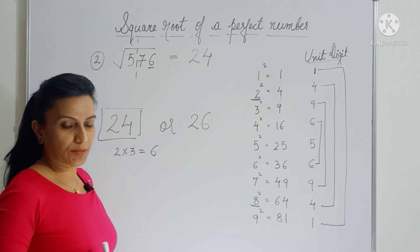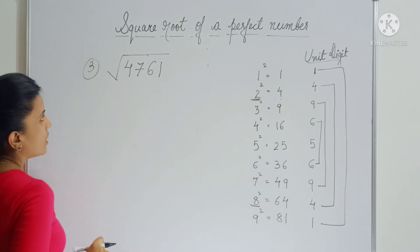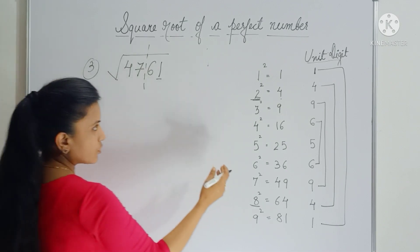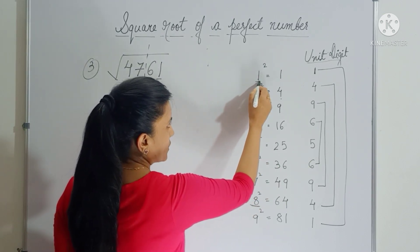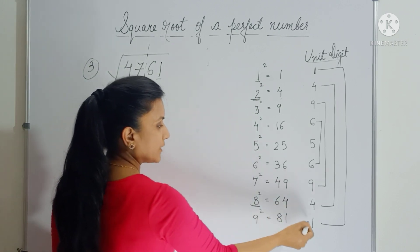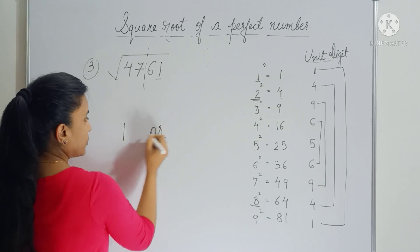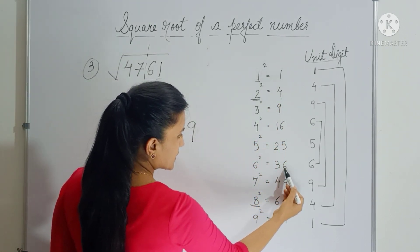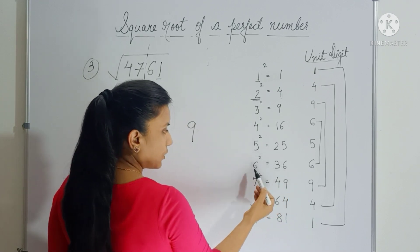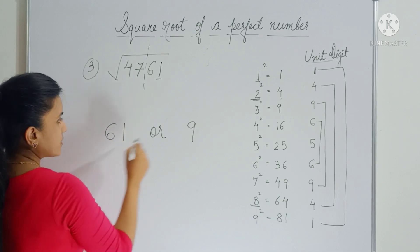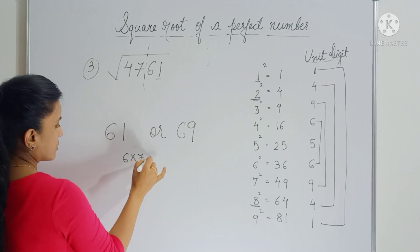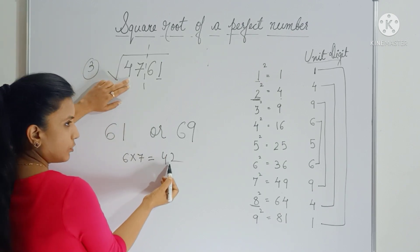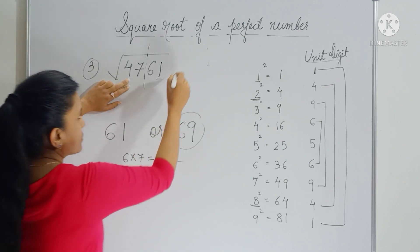Now let's take a 4-digit number — the square root of 4761. Separate the last two digits. Here 1 is in the unit digit, so we check whose square ends with 1. One square ends with 1, and 1's complement is 9, so 9 square also ends with 1. So your answer will end with either 1 or 9. Now check where 47 falls: 47 comes between 36 and 49, so we take the smaller number, which is 6. So the answer will be either 61 or 69. Multiply 6 by the next number to get 42. Since 47 is bigger than 42, the bigger number is your answer — so 69 is the answer.